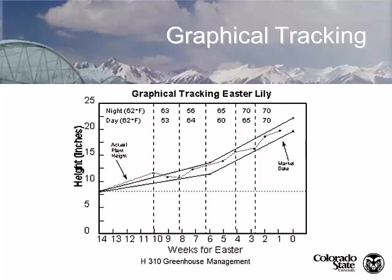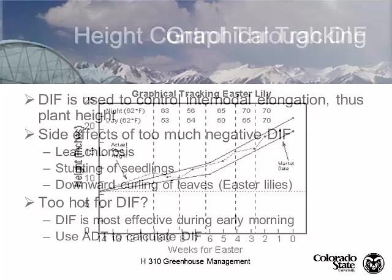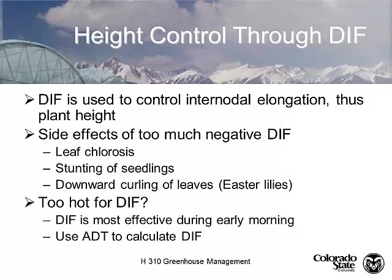Student asks why photosynthetic activity is highest at sunrise. At sunrise, the plant is fully turgid—it's waking up, the stomata are opening, and it's taking up as much water as it's going to have. It's just ready to go. By solar noon, plants are starting to wilt and stress, and the photosynthetic rate starts to decline.